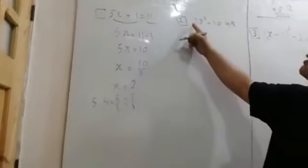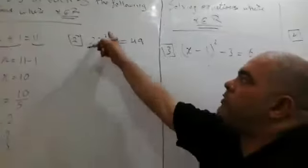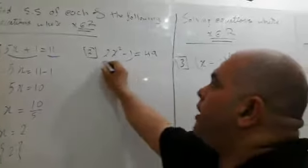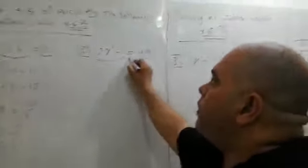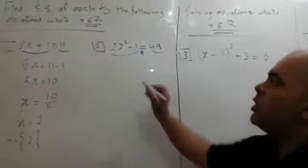Second: 2x squared minus 1 equals 49. This is the equation, equation of second degree. Left-hand side, right-hand side. Between them, equal.